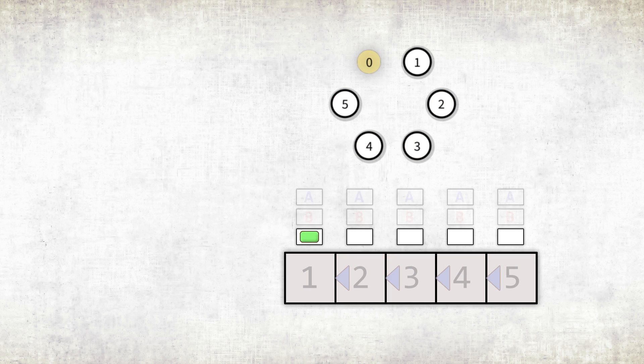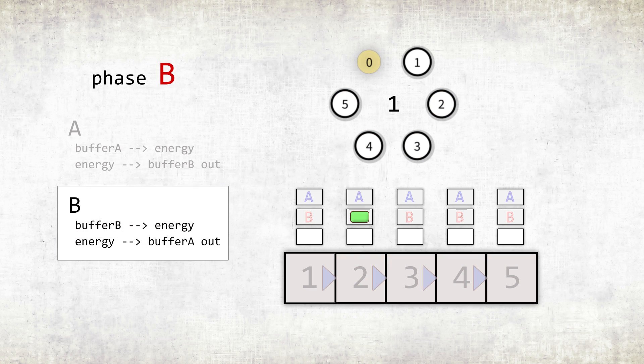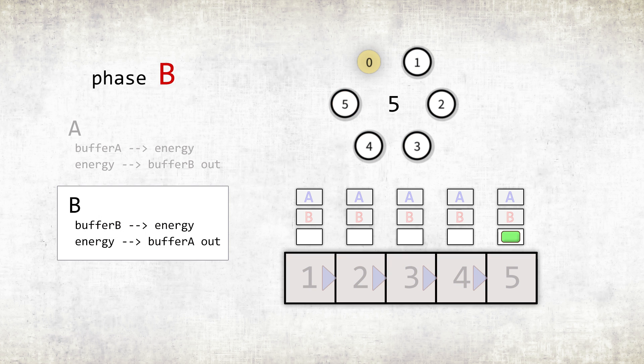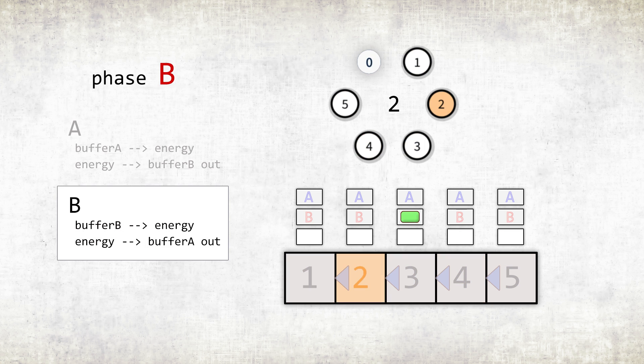The solution for this problem is to create additional buffers and create two separate phases A and B, which alternate on each step of the simulation. Let's start the simulation. The current phase is A. During this phase, energy can be taken from buffer A and transferred to buffer B of the adjacent cell. The second cell's buffer A is empty, so it will have to wait until the next step of the simulation. In the next step, the energy will be transferred only to the third cell. Transporting energy in the opposite direction has the same principle. For each simulation step, the energy can move by only one cell.